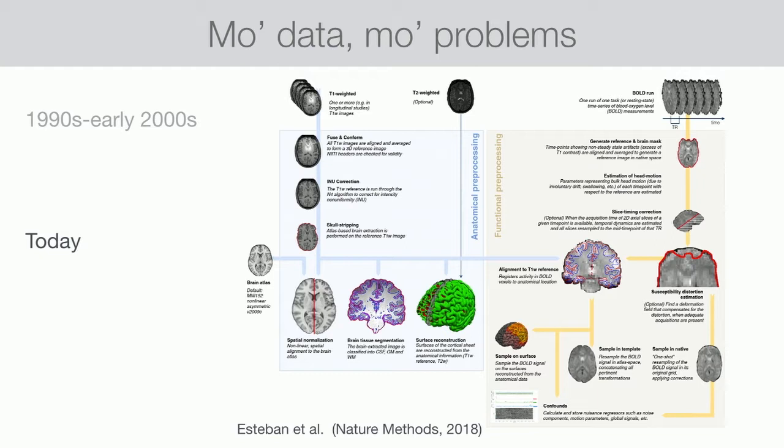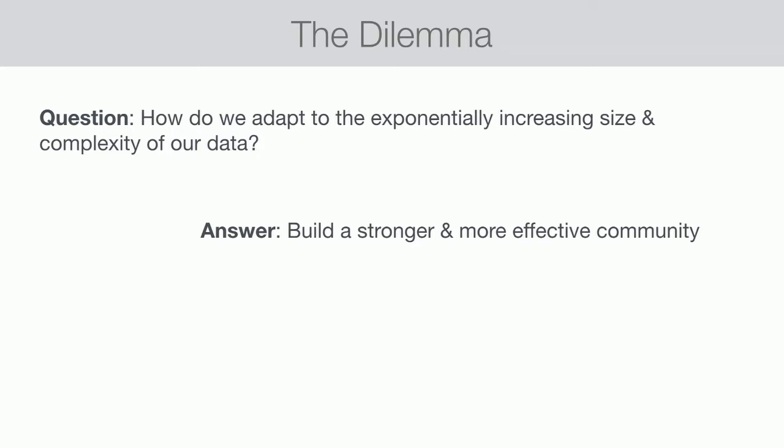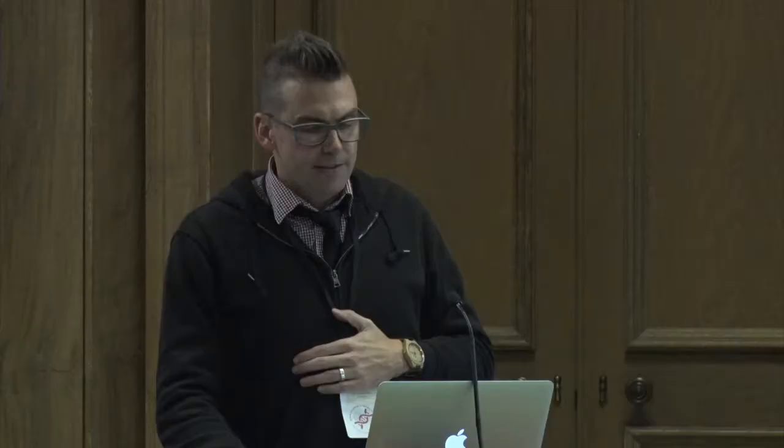So we have this dilemma: how do we as a field adapt to the exponentially increasing size and complexity of our data? The answer is to build a stronger and more effective research community. And I'm going to say the only way we can do this is by adopting open science practices. That's actually where we're going as a field — compared to fields like genomics, astronomy, and physics, we're a little bit behind on things like data standardization, but we're catching up.